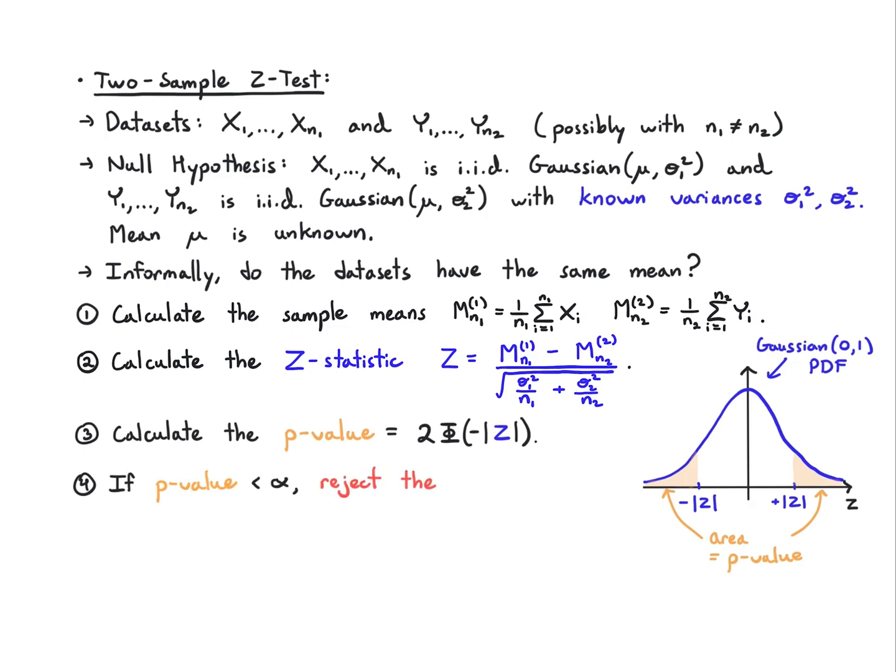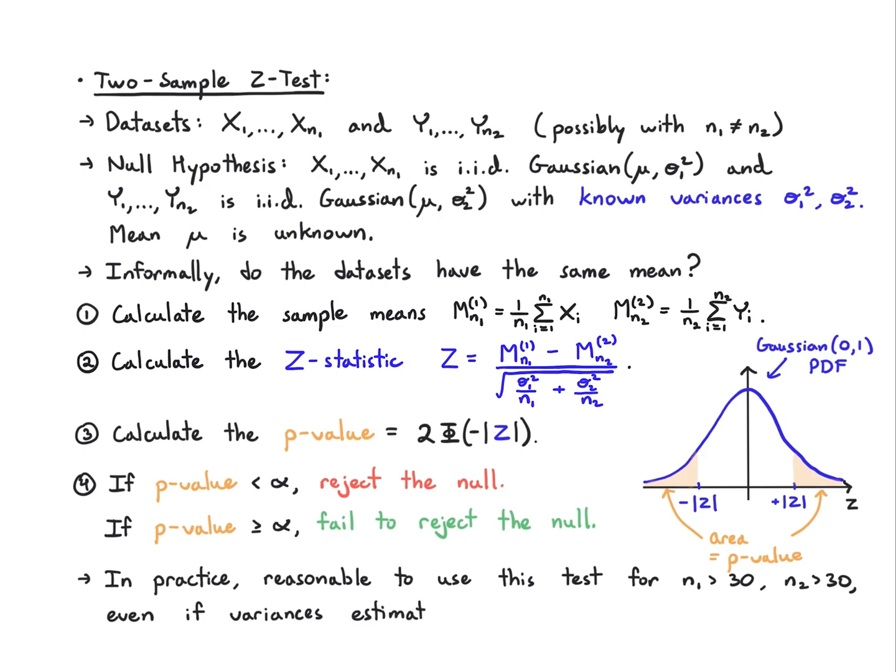Again, we compare to alpha, reject if it's less than alpha, fail to reject if it's greater than equal to alpha. In practice, very reasonable to use this in scenarios where we think the central limit theorem is going to be in effect. We have about 30 samples per dataset or really more than 30 per dataset. Even if we estimate the variances from data, that's kind of okay.